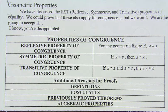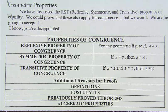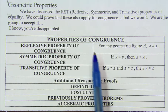For tonight's video, we're going to take a look at a couple extra properties that we haven't looked at yet in class: the reflexive property, the symmetric property, and the transitive property. The reflexive property is one that we're going to actually use quite a bit this year when we start writing our proofs.